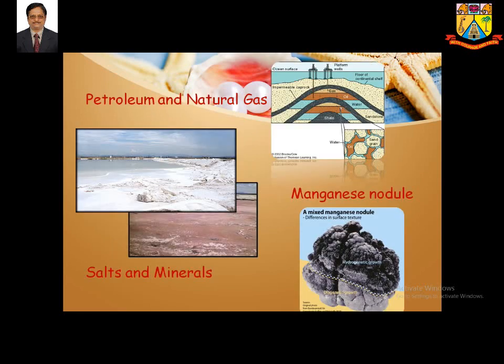The ocean is truly a gift. We get salt daily in our food — it is sodium chloride, essential for our body. We also have nodules resembling black potatoes, which are abundant in the Arabian Sea near Goa, with tremendous future scope for exploiting manganese and iron. Petroleum and natural gas can also be obtained from beneath the ocean.